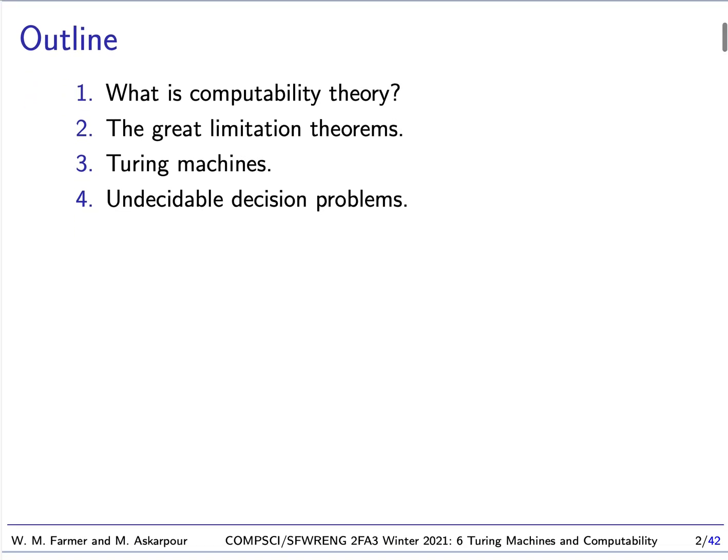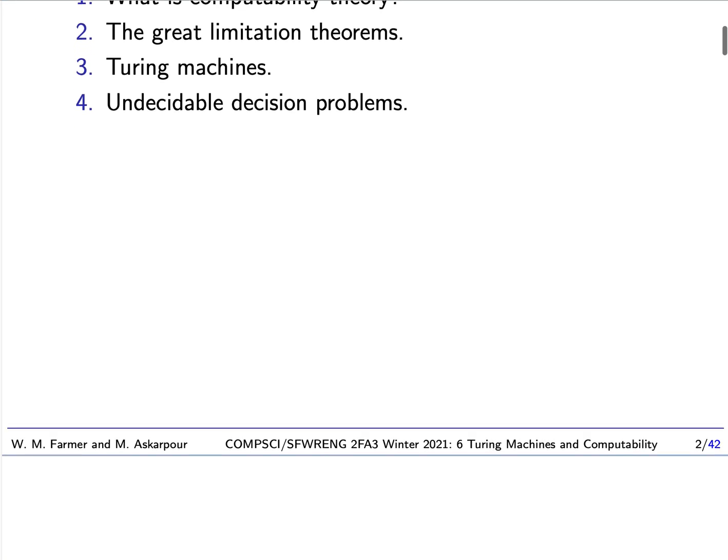This topic will have four parts. The first will be: what is computability theory? That will be followed by the great limitation theorems, then Turing Machines, and finally undecidable decision problems.